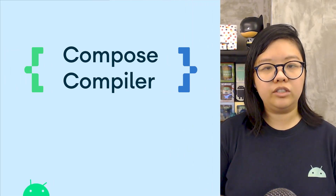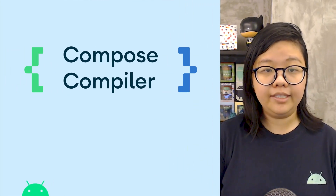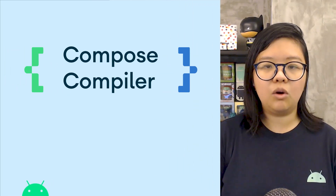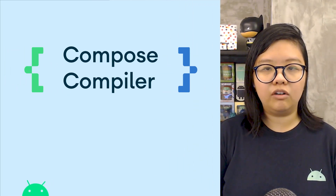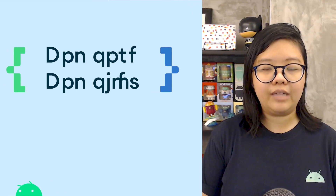Going to the Jetpack Compose Library, Compose Compiler 1.4.0 is now stable. This release brings support for Kotlin 1.8.0 and turns off Intrinsic Remember, among other improvements.